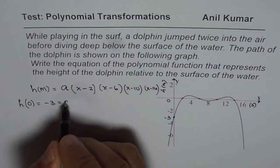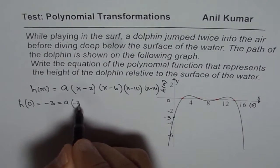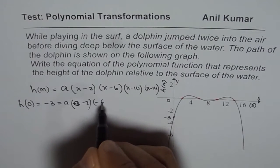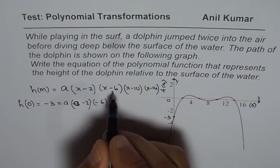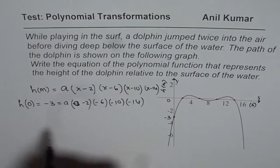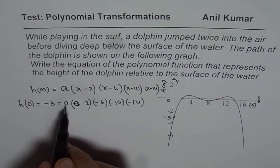We can substitute and find a, so we have 0 minus 2. So we could write straight away. When you write 0 here, you get minus 6 times minus 10 times minus 14. So from here, we can find the value of a.